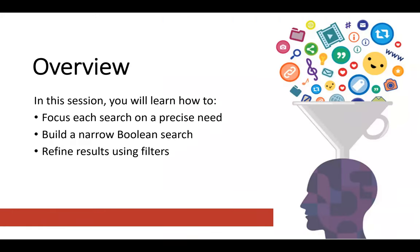Here's the overview of what we're going to cover. I will show you how to focus your searches on a precise need. Then I'm going to show you how to build searches for different search systems using something called Boolean search. And then finally, I'm going to show you a third technique of using refining tools to filter results so that you're looking at fewer things. All of this is about reducing the number of sources you get so that you spend less time evaluating.